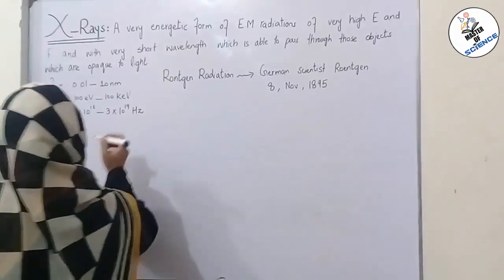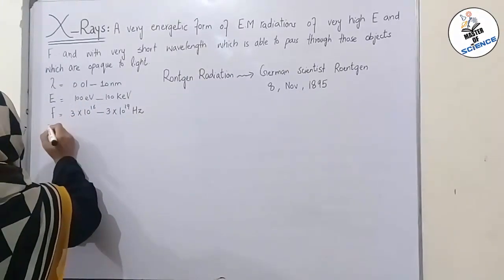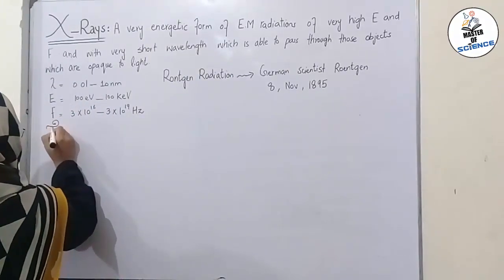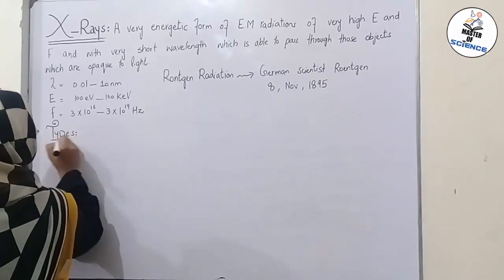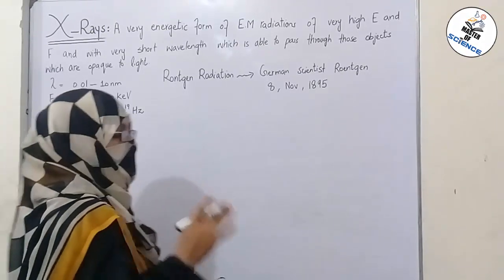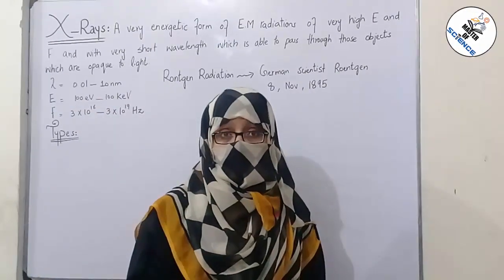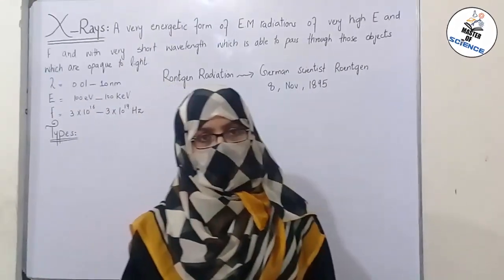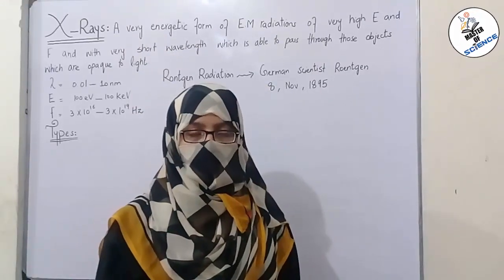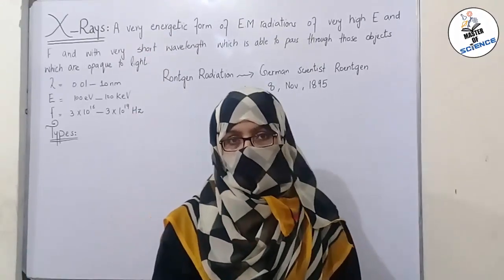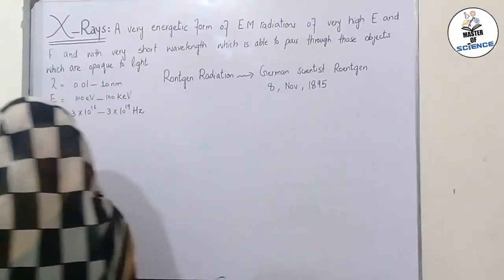Now we will discuss about its types. What are the types of X-rays? On the basis of energy ranges, there are basically two types of X-rays: first one is high energy X-rays and second one is low energy X-rays.